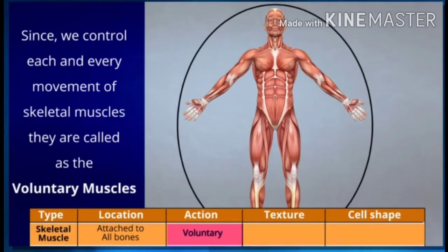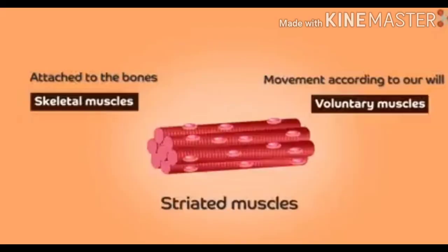These are voluntary muscles, meaning we can control each and every movement. They are called voluntary muscles — examples include movement of the hands and legs.